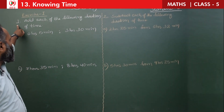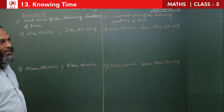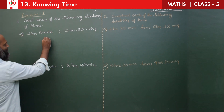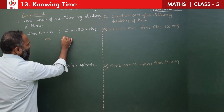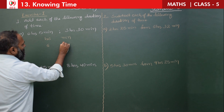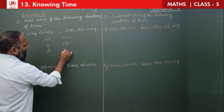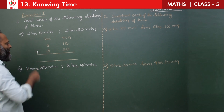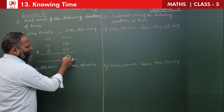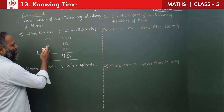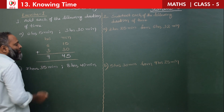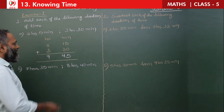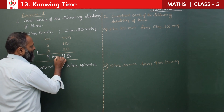Exercise 1: Add each of the following durations. First: 6 hours 15 minutes plus 3 hours 30 minutes. Write in hours and minutes columns. Minutes: 5 plus 0 = 5, and 1 plus 3 = 4, giving 45 minutes. Hours: 6 plus 3 = 9. Answer is 9 hours 45 minutes. Since 45 is less than 60, no conversion needed.